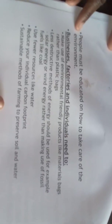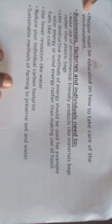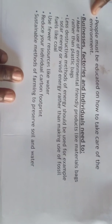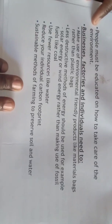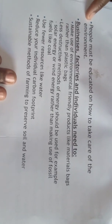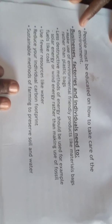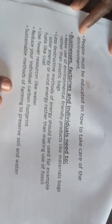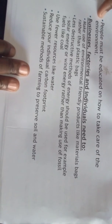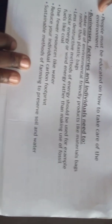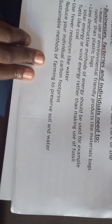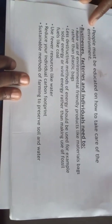People must be educated on how to take care of our environment. We have to implement sustainability, make use of environmentally friendly products like avoiding plastics, and use less destructive methods of energy. For example, we can use solar energy and wind energy to replace fossil fuels like coal.